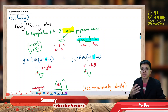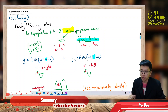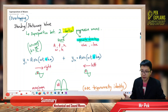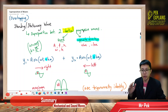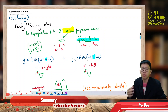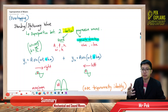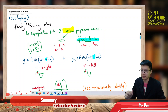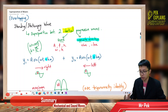This stationary wave is also called a standing wave. We have progressive wave and stationary wave — what's the difference? As the name suggests, progressive means the wave can move. When the wave is moving, it's called a progressive wave. When the wave is not moving, we say it is a stationary wave or standing wave. The stationary wave does not move.